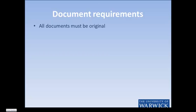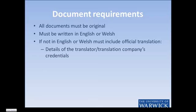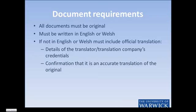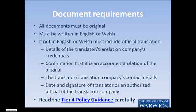The Home Office states in their Tier 4 policy guidance that all documents provided to support an application must be original. They must also be written in English or Welsh. If they are not written in English or Welsh, then it will be necessary to obtain an official translation, which must include details of the translator or translation company's credentials, confirmation that it is an accurate translation of the original document, the translator or translation company's contact details, and the date and signature of the translator or an authorised official of the translation company. You are advised to read the Tier 4 policy guidance extremely carefully to ensure all your documents meet the Home Office requirements. Failure to provide information in the required format may result in your application being refused.